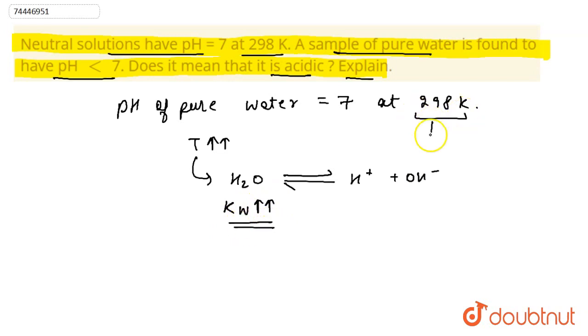The value of kW, we represent as 10 raised to the power minus 14. Now, when our temperature increases, our kW's value at 298K is 10 to the power minus 14. So, we get a new kW, kW prime at higher temperatures. Its value is greater than 10 to the power minus 14.